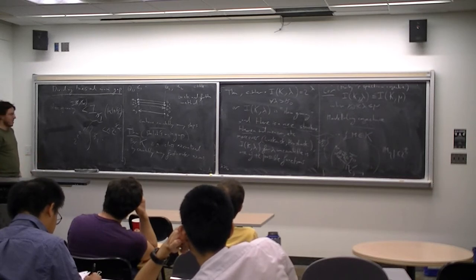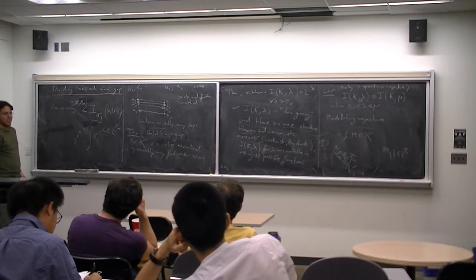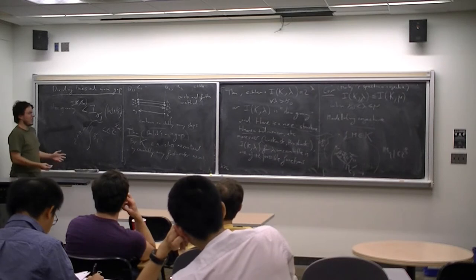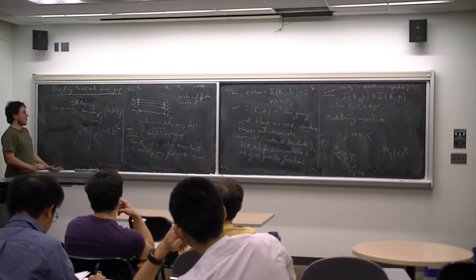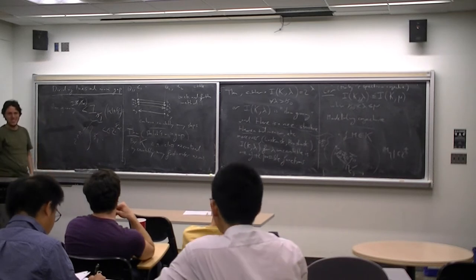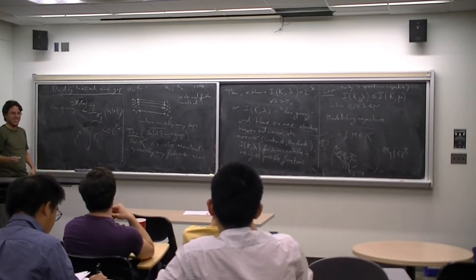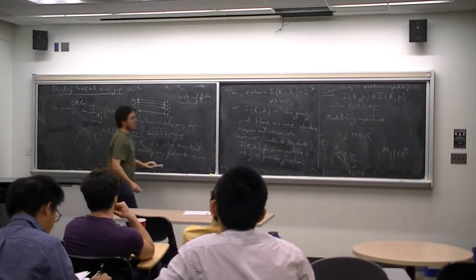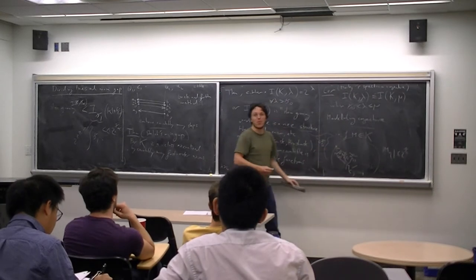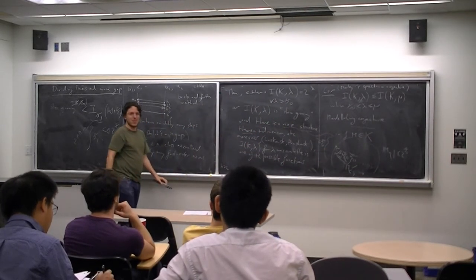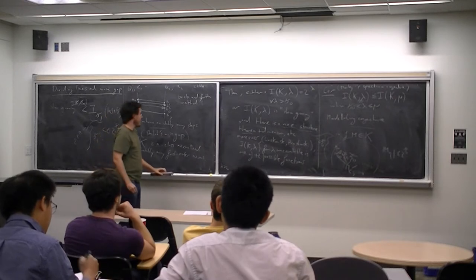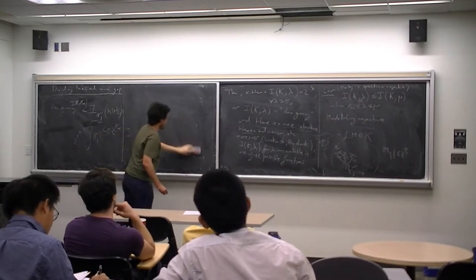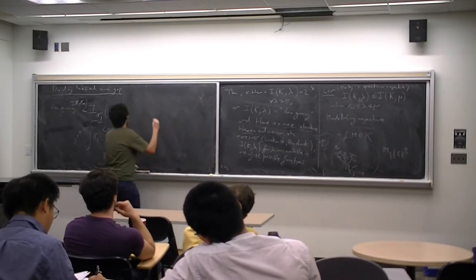If you assume the continuum hypothesis this is fine. Even without it, there are models where this function equals ℶ_{|α|+}. It can be equal to that. This is why it's more important to remember there is a nice structure theorem than to remember the exact bound of the cardinal spectrum function. So how do you prove this? This is where the dividing line part of the title comes in. I'm working with a countable first-order set of axioms.